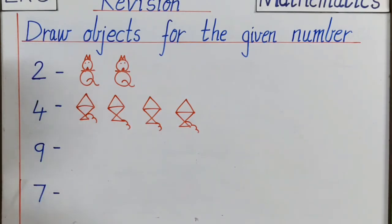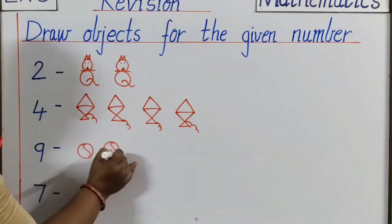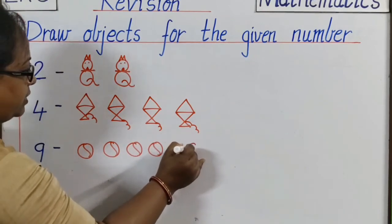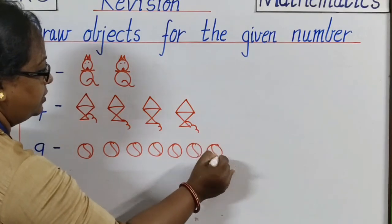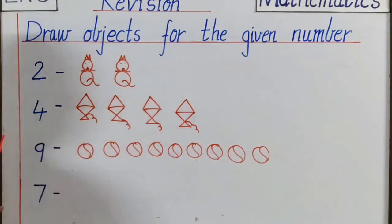Next number is nine. So, what shall we draw? Let's draw nine balls. One, two, three, four, five, six, seven, eight, and nine. Let's check again. One, two, three, four, five, six, seven, eight, and nine. Is it correct? Yes.